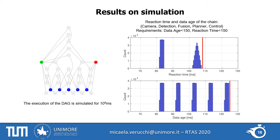The simulation results show that we are able to find a correct DAG for the input requirements. The charts show the results of simulating execution of the DAG for 10^9 milliseconds. On the x-axis you can find the reaction time or data age, and on the y-axis the number of occurrences. Since the DAG has parallel nodes, execution is not fixed and can vary. The important thing is that the latency of the considered chain never crosses the computed bound and stays under the requirement — in this case, 150 milliseconds.